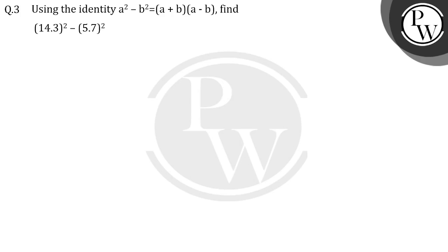Hello students, let's see this question. Here we have the identity a² - b² = (a+b)(a-b). We have to find this. So this is our a, this is equal to a plus b.